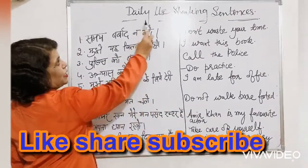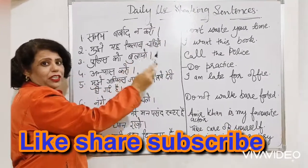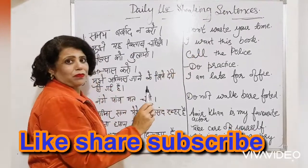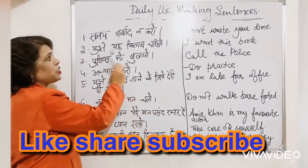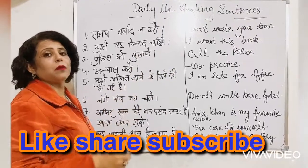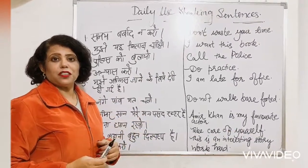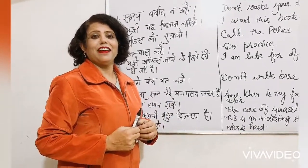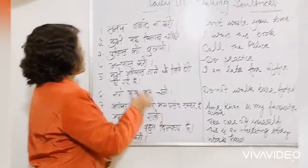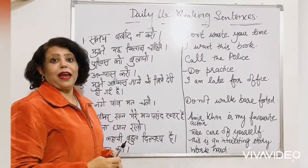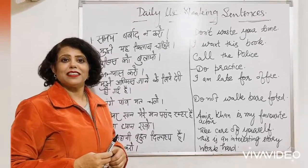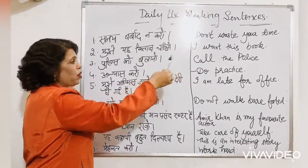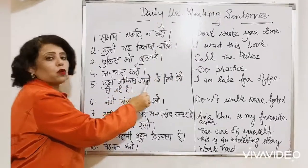Our daily use sentences I have translated. Don't waste your time. I want this book. I want this purse. I want this money. Anything you can ask for. Call the police. Call the ambulance. You can make and improve your skills. Do practice.